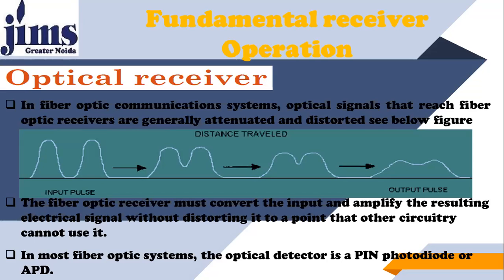In an Optical Communication System, optical signals that reach the Fiber Optic Receiver are generally attenuated and distorted, as shown in the figure. The pulses at the output of the transmitter become weaker and weaker as they travel, with their amplitude decreasing. The Fiber Optic Receiver must convert the input and amplify the resulting electrical signal without distorting it to a point that other circuitry cannot use it. In most Fiber Optic Systems, the optical detector is a PIN photodiode or APD — we choose between PIN photodiode or Avalanche Photodiode.